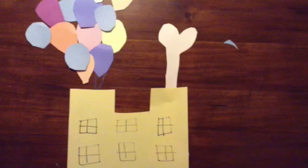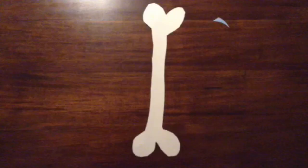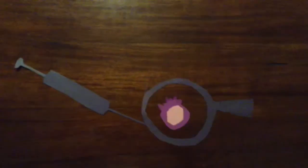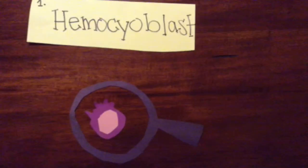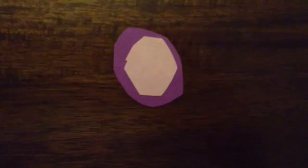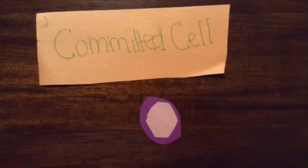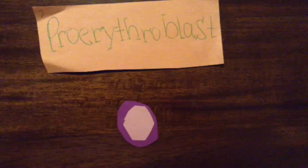The life cycle of an erythrocyte: the production of erythrocytes takes place in the bone marrow, and the stem cell, which all blood cells are made from, is called a hemocytoblast. After the stem cell differentiates, it becomes a proerythroblast, or a committed cell.